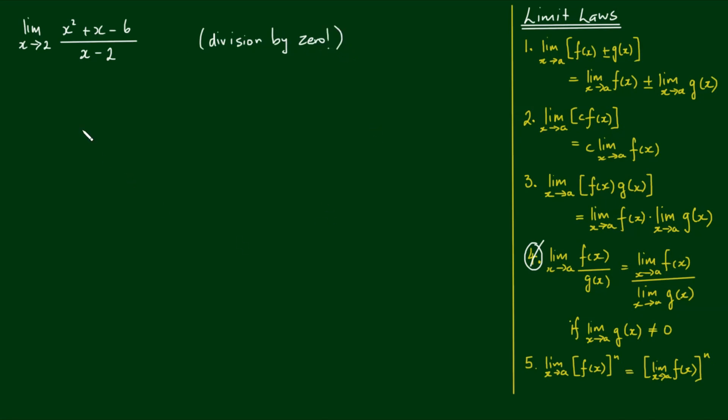So what I'm going to do is manipulate this algebraically a little bit. What I can notice is that x squared plus x minus 6 can be written as x squared plus 3x minus 2x minus 6. So positive 3x minus 2x gives me back my x. Now I can factor out an x in the front two terms, so I have x outside of x plus 3.